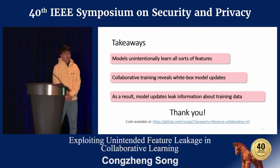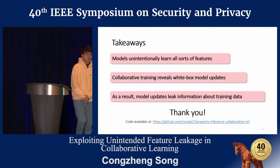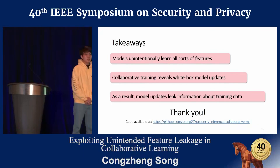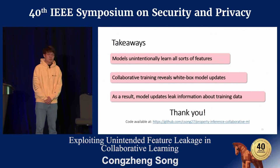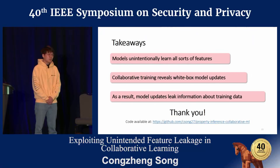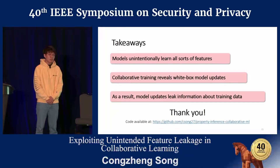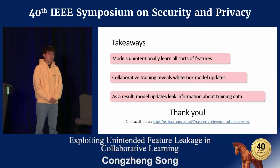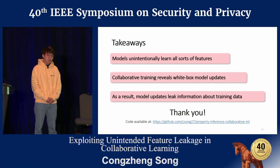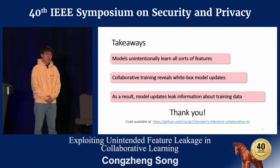Hi, thank you for the talk. This is Roxana Jambashi from Columbia. There is work on differentially private collaborative training — do your attacks apply to that? We mentioned that work as one of our countermeasures. Their work basically needs millions of participants to ensure the model is converging. In our case, the number of participants is much smaller, so their method doesn't converge and the model doesn't perform well on its main task.